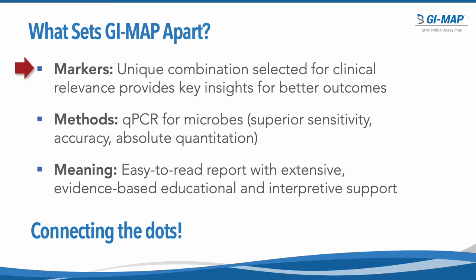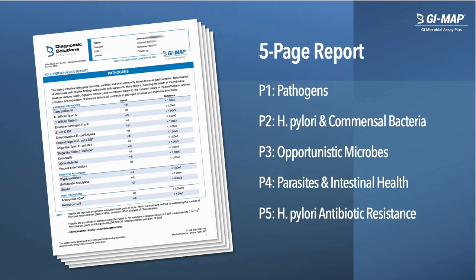Now I'd like to walk you through the GI Map report itself and highlight the markers that are included. The GI Map report includes five pages of results: page one covers gastrointestinal pathogens; page two covers H. pylori as well as the normal commensal bacteria; page three contains opportunistic microbes ranging from bacteria to fungi to viruses; page four has parasitic opportunistic microbes as well as the intestinal health markers; and page five contains the H. pylori antibiotic resistance genes. The overall report is quite condensed, easy to read at only five pages, making it very easy for busy clinicians to quickly scan and identify the most relevant results for their patients.